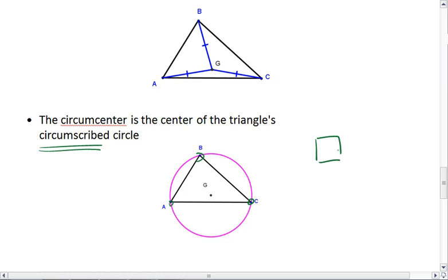For example, we can have a circumscribed circle around a square. Assume that that actually touches at all the vertices. There's a number of ways that we can have a circumscribed circle.